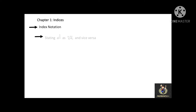Next, we will learn about stating a to the power of 1 over n as the nth root of a, and vice versa. For example, 4 to the power of 1 over 2 is equal to the square root of 4, and the square root of 4 is equal to 2, because 2 times 2 equals 4.